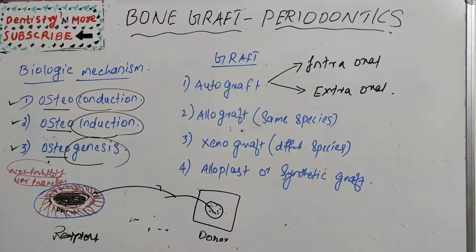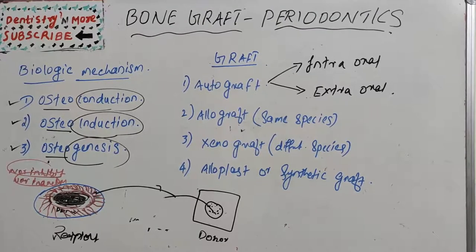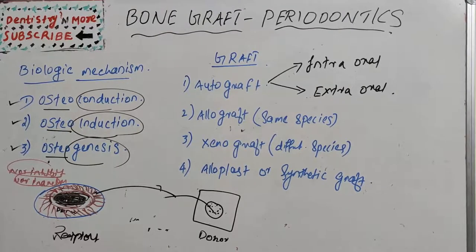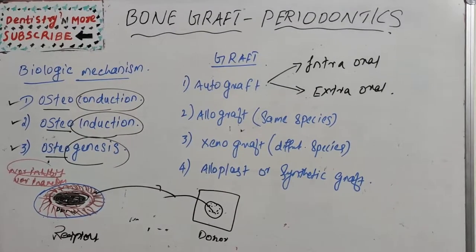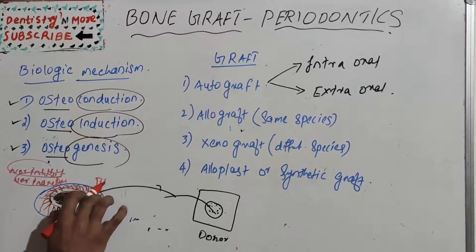Osteoinduction involves new bone formation via stimulation of osteoprogenitor cells from the defect vasculature, which then differentiate into osteoblasts and begin forming new bone. The bone formation here is induced — it is induced with the help of some inactive materials such as bone morphogenic proteins (BMPs).